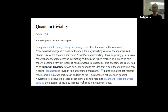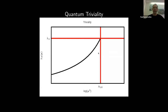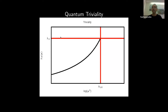Quantum triviality means that the running coupling at some scale M we're interested in — say, the mass of a particle — is zero in the continuum limit. If you simulate a theory with a lattice gauge theory or other theory with a cutoff, and then renormalize, the running coupling looks like a curve where you dial in a value lambda_0 at the UV scale, which is the coupling at the lattice scale.